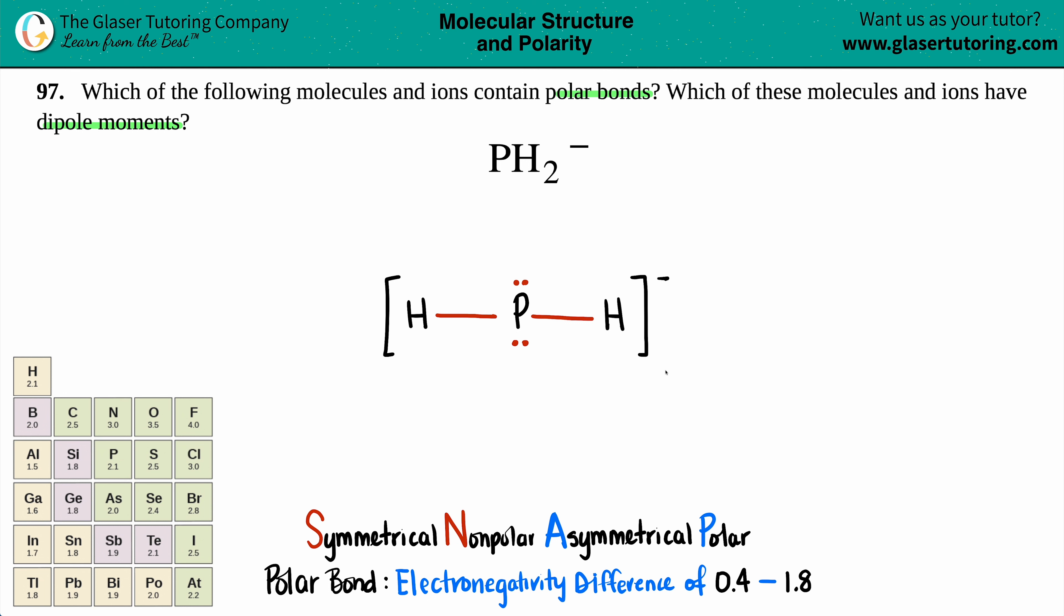Now let's figure out if there's polar bonds. If we're talking about the bonds, all you're doing is you're just looking at an individual bond between the two elements. There's two bonds here, but for each one of them, it's an H-P bond and then an H-P bond. So it doesn't matter which one you look at. I'll say we're going to do H-P.